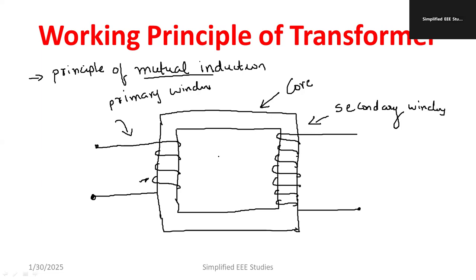Why is a transformer required? Sometimes the load requires high voltage but our input is very less, so you need to go for step-up action. Conversely, we have high input voltage but our load requires less voltage, so we need to go for step-down action. Similarly for current — sometimes we go for high current applications, sometimes low. So you can change the voltage and current either stepping up or stepping down.